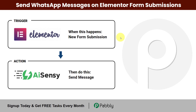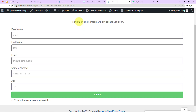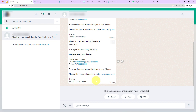Hello everyone, welcome to Pabbly. In this video we are going to understand how to send WhatsApp messages on Elementor form submission. Every time a new response is received, you want to send a welcome message to the new lead, so the moment this form is filled by the user, a WhatsApp message will automatically be received by the user.